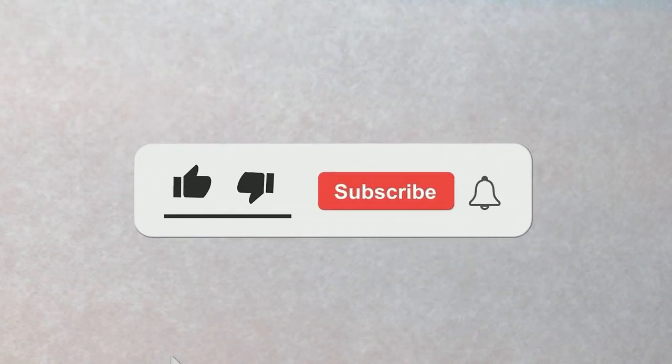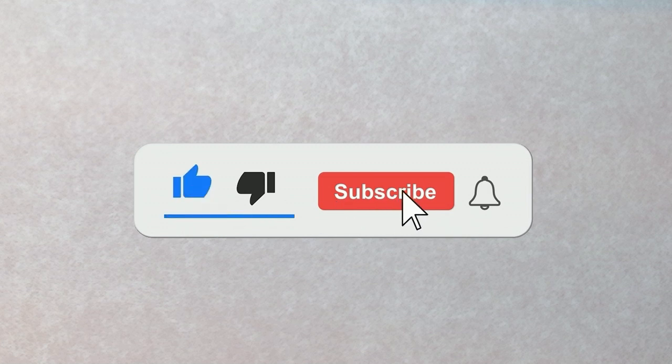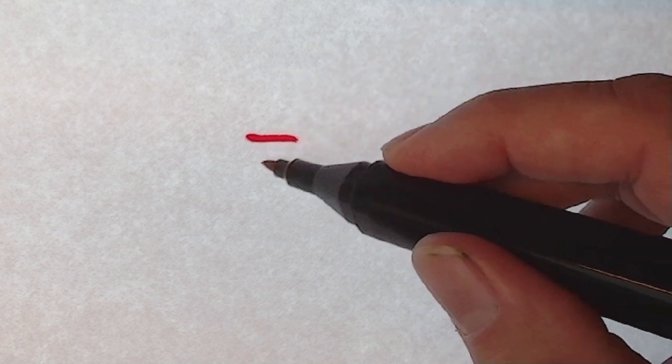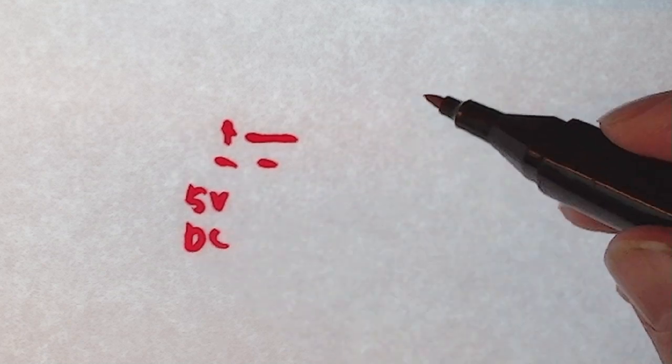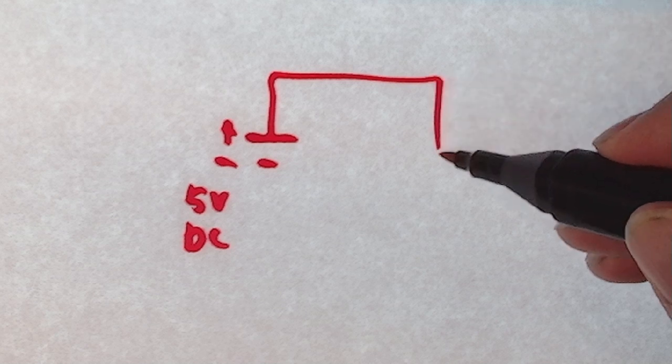So if we want to turn an LED on, we have to look at the basic circuit, which is as follows: we have our battery, in this case 5 volt DC, we go to our LED.